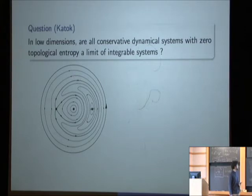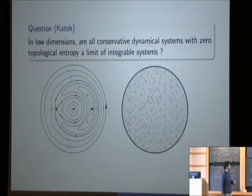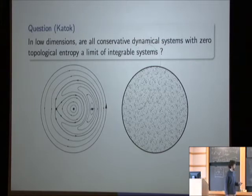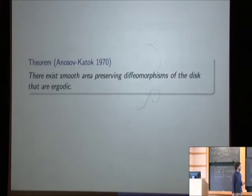How crazy can maps with zero topological entropy be on a disk that preserve the standard area form? It turns out there are ones that have a dense orbit. So there are ergodic examples, and this was discovered in 1970. This is a theorem of Anosov and Katok. They showed that there are actually smooth, area-preserving diffeomorphisms of the disk which are ergodic. That means almost every point of the disk is the initial condition of a dense orbit. Now, given this, how might you imagine that this is going to be approximated by something so nicely organized?